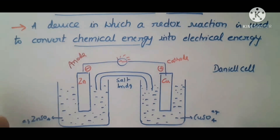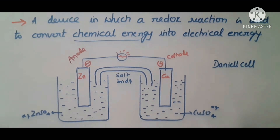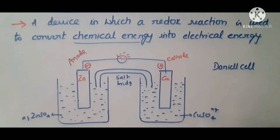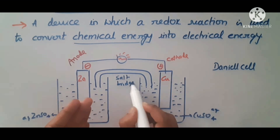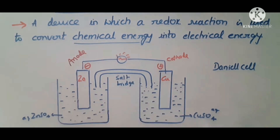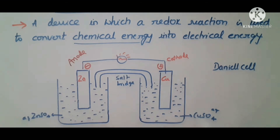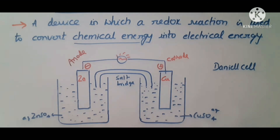An electrochemical cell consists of two cells connected to each other by means of a salt bridge. The best example is the Daniel cell. Electrochemical cells are of two types: electrolytic cells and galvanic cells.